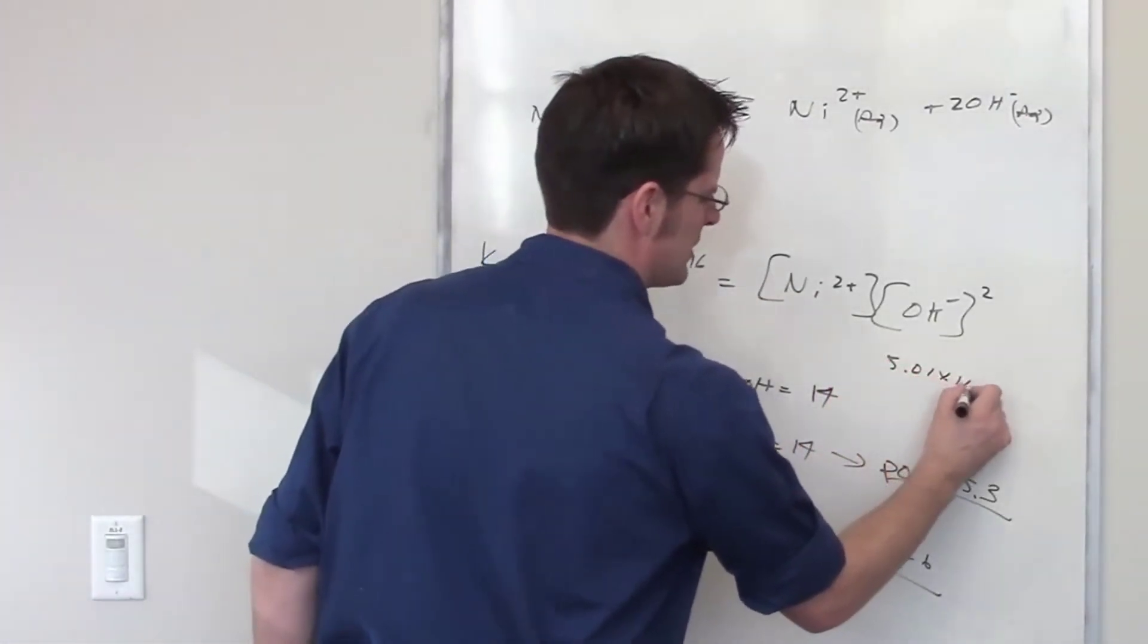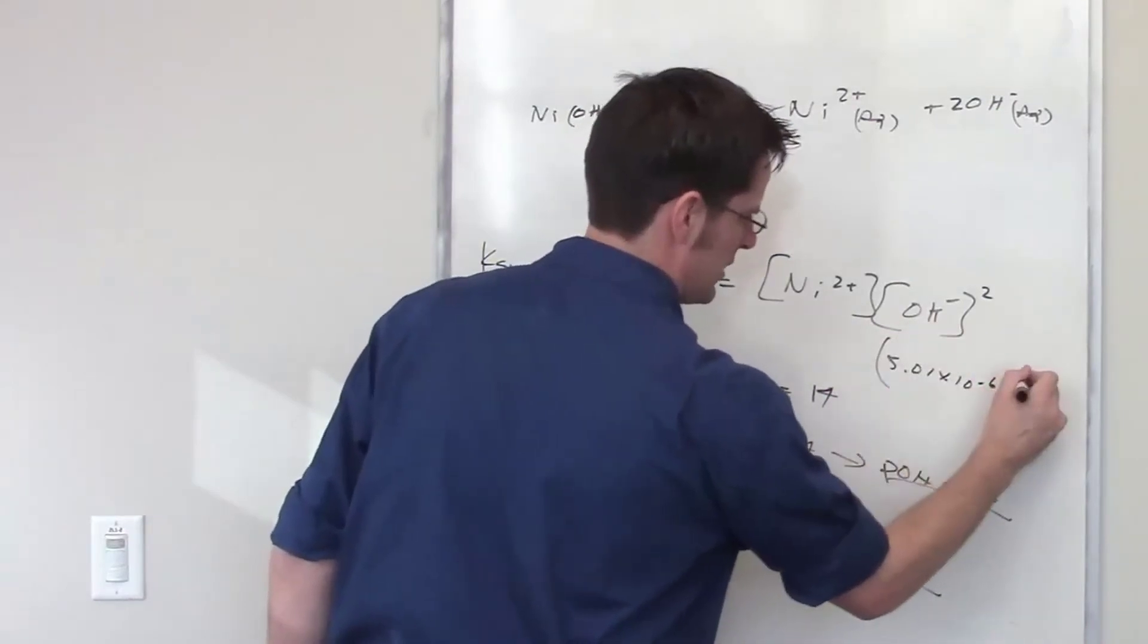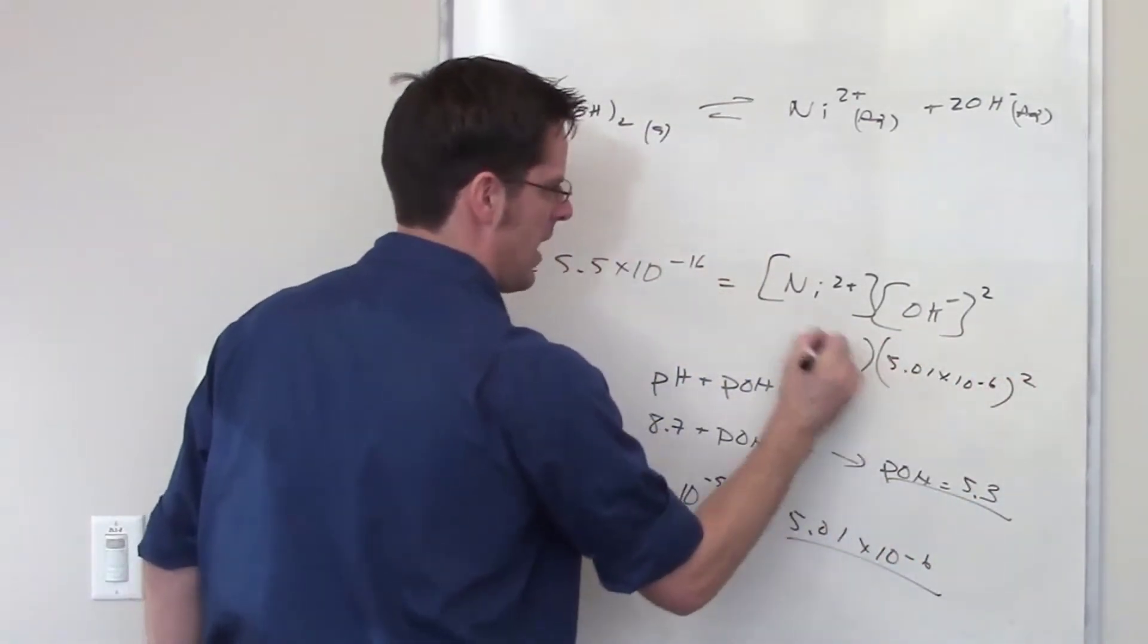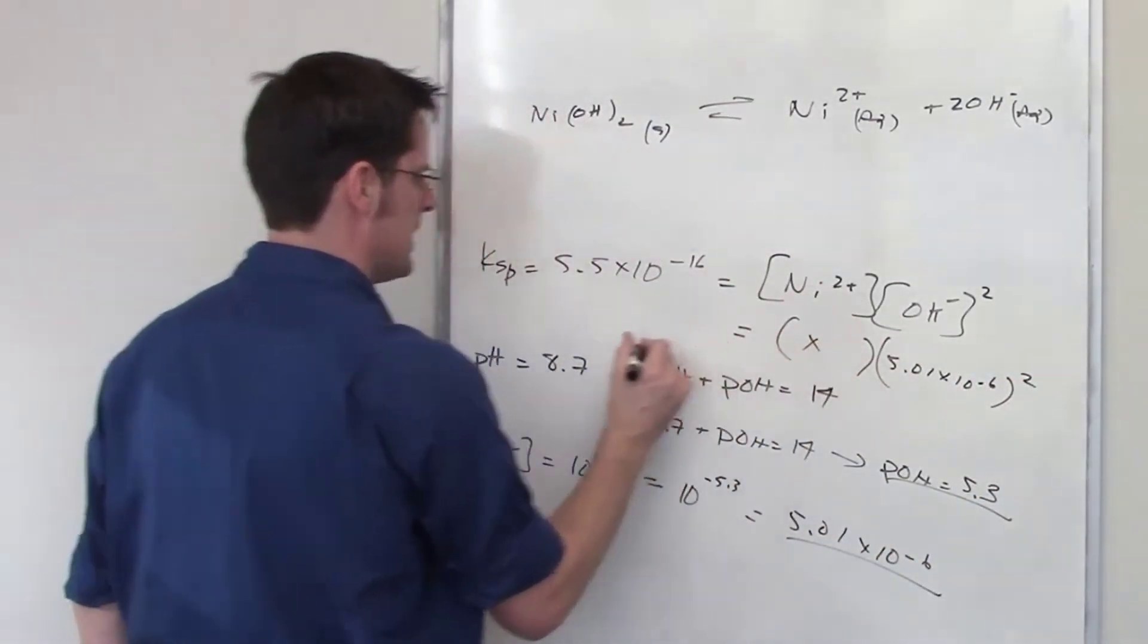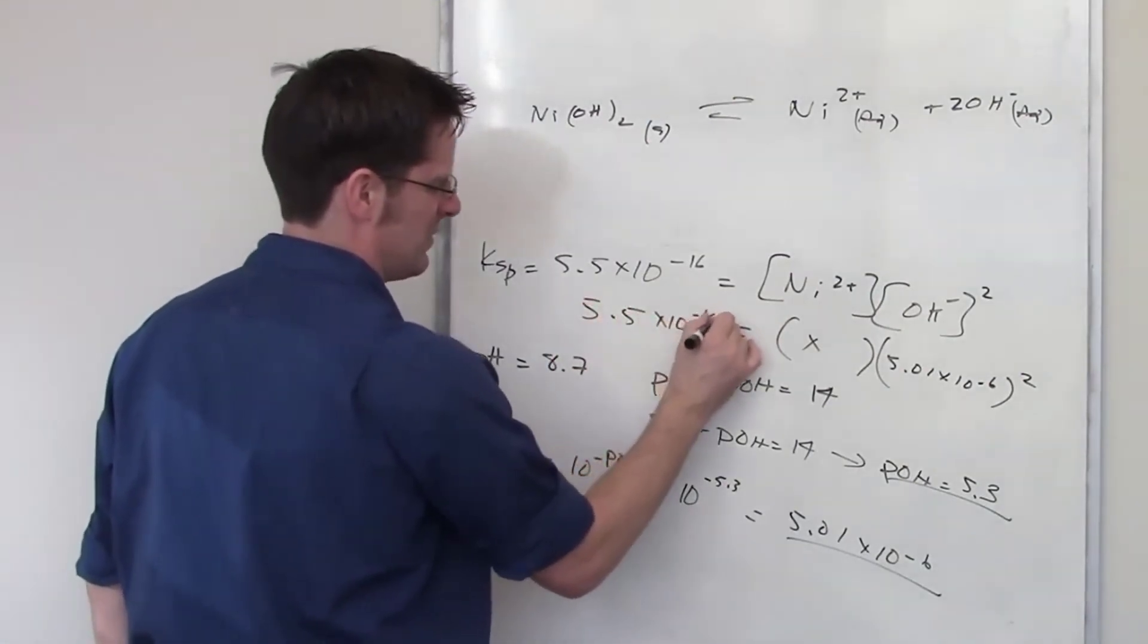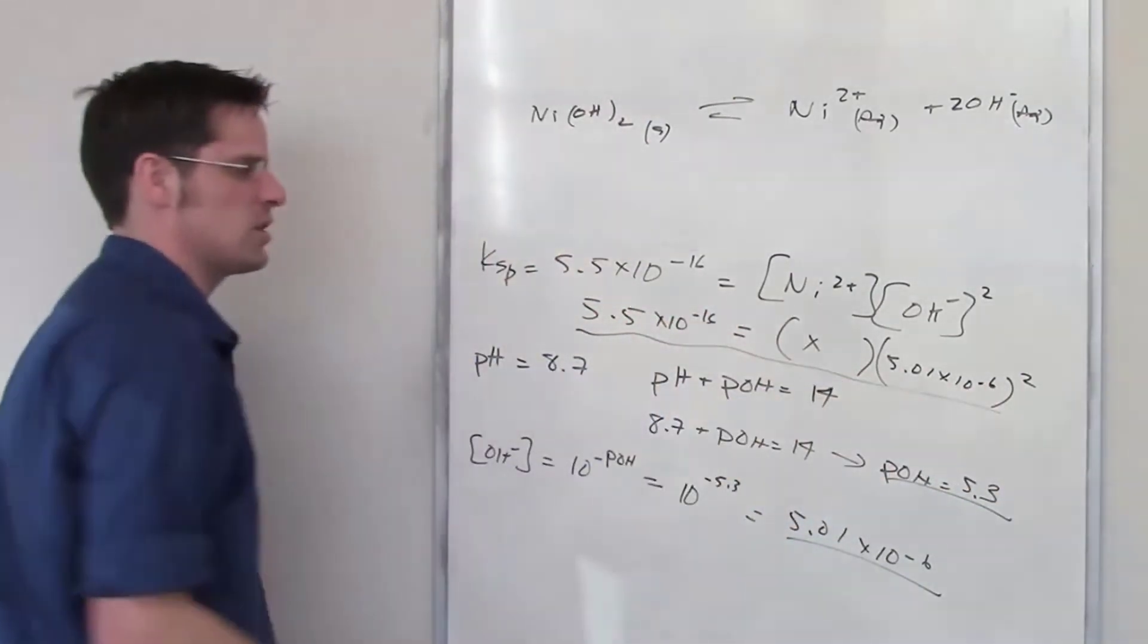I've got 5.01 times 10 to the negative 6 thrown in here for the hydroxide. I have to square that, and then I'll put X in here for nickel 2 plus, and I've got that equal to 5.5 times 10 to the negative 16. This is what I'm trying to solve for.